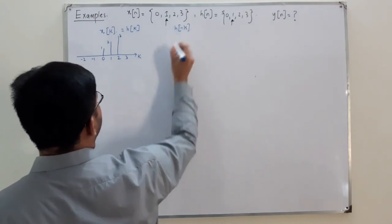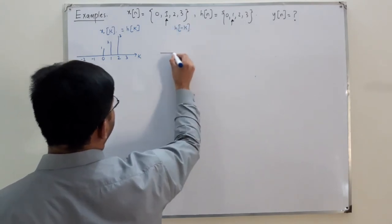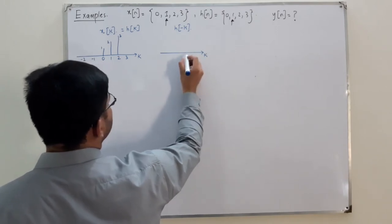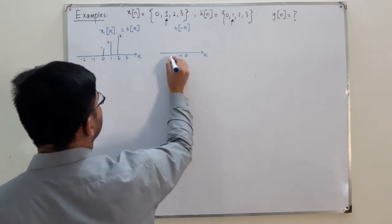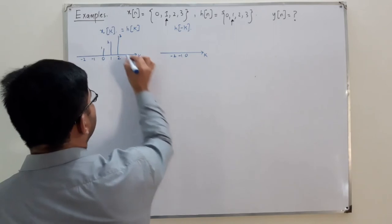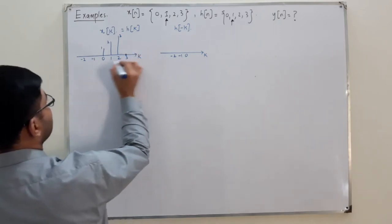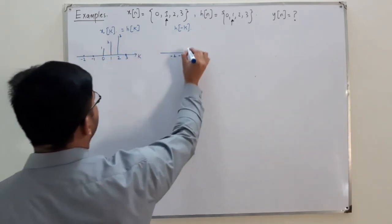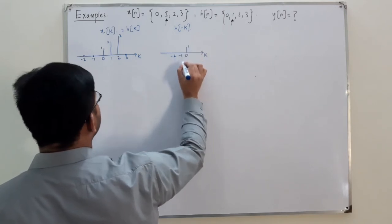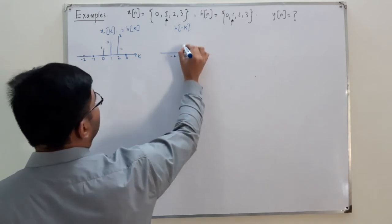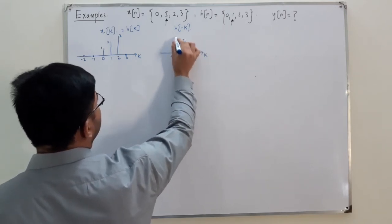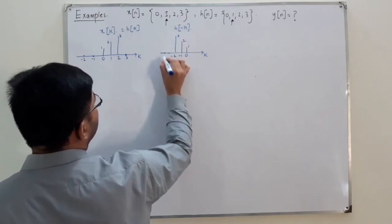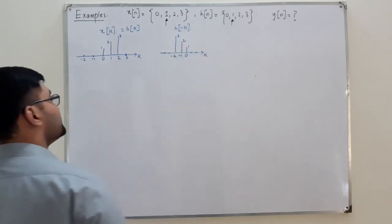Now find h(minus k). On the k-axis, at 0 you have 1, at minus 1 you have 2, at minus 2 you have 3, and it is 0 otherwise.